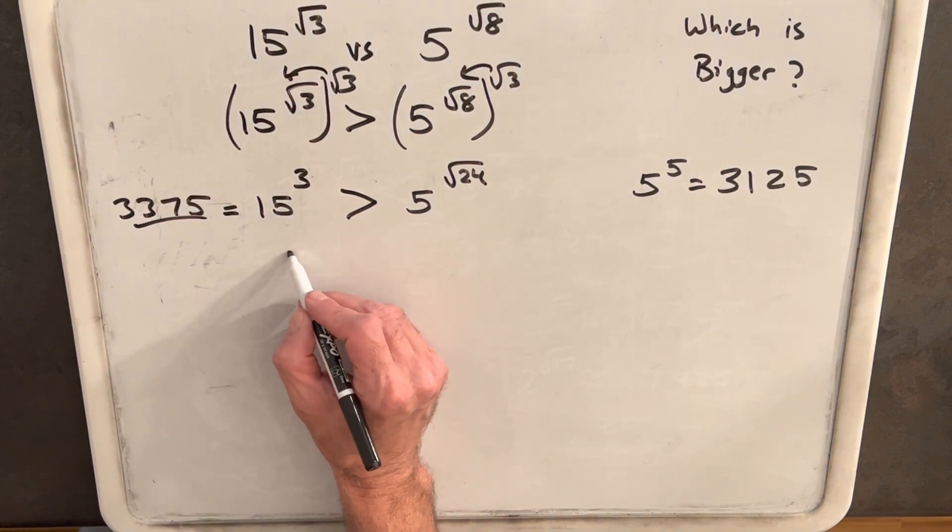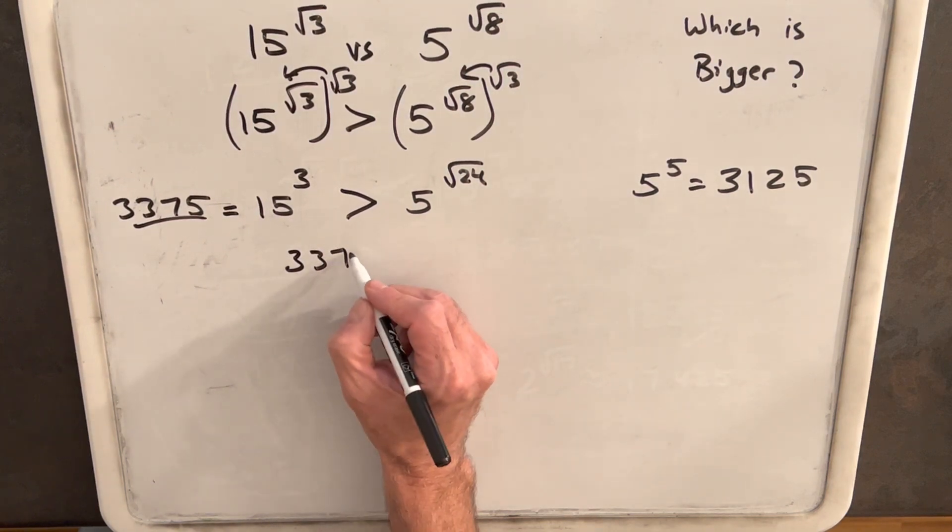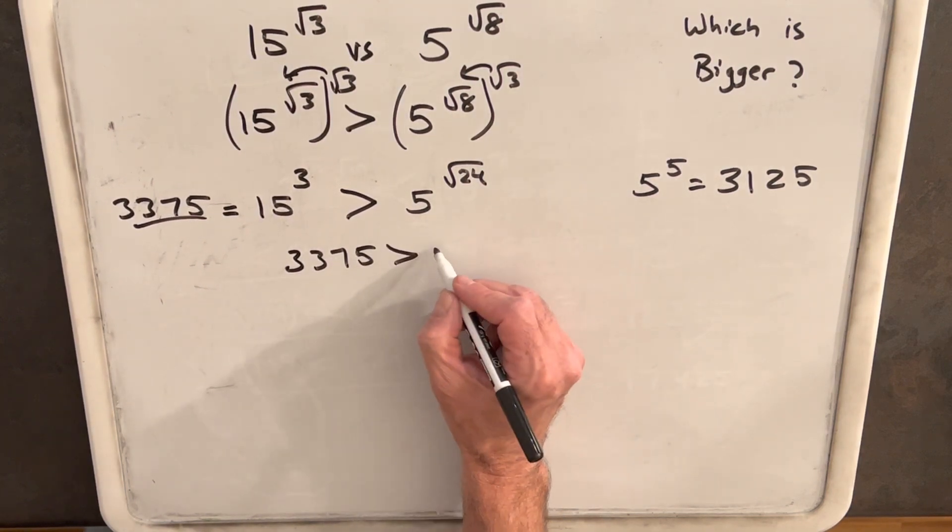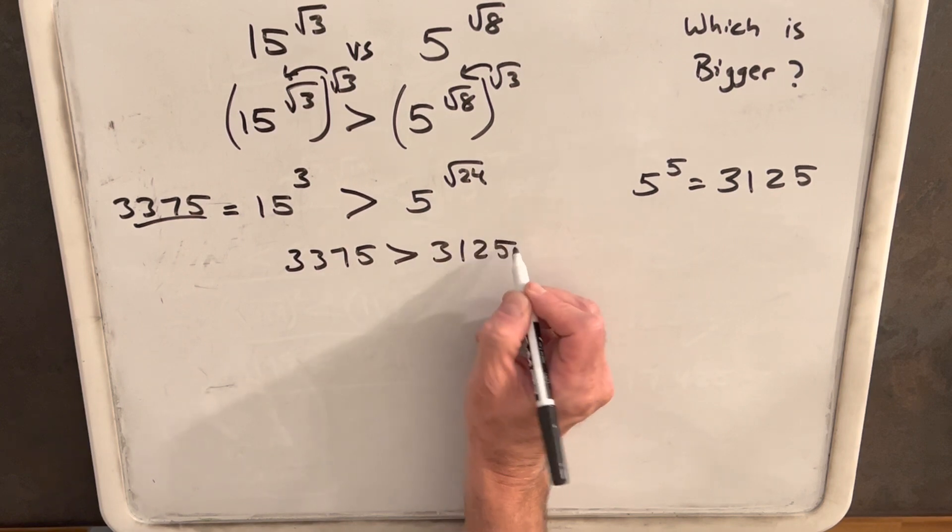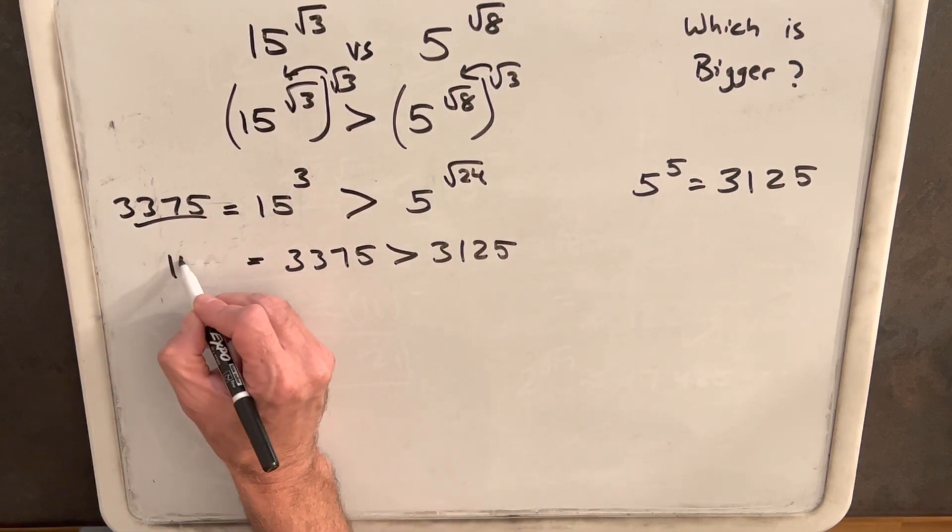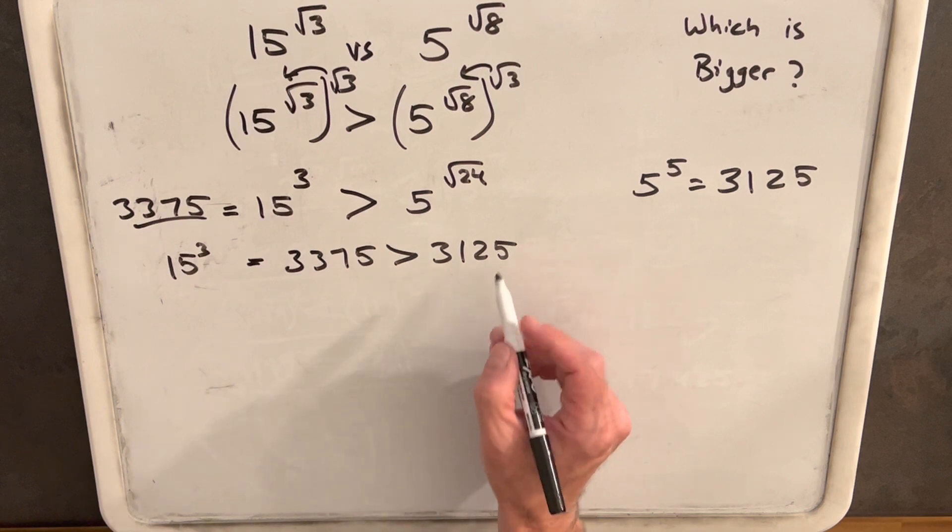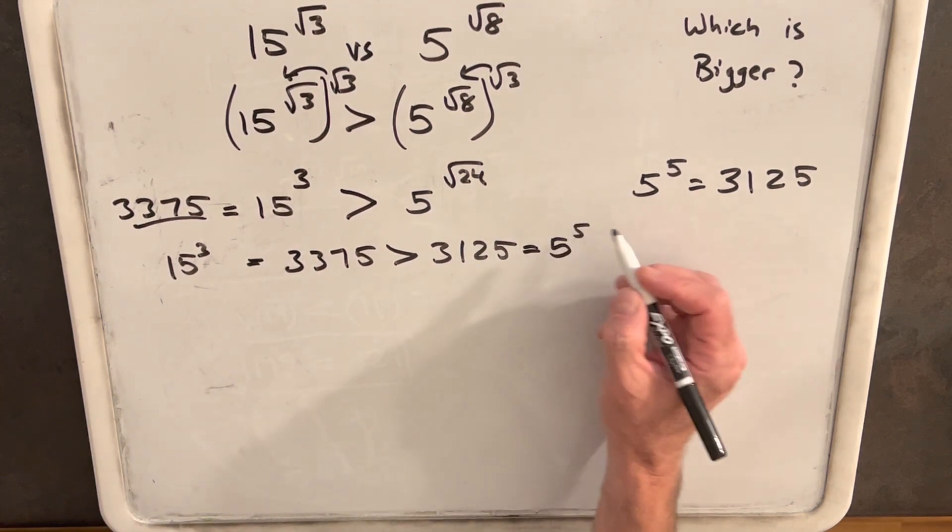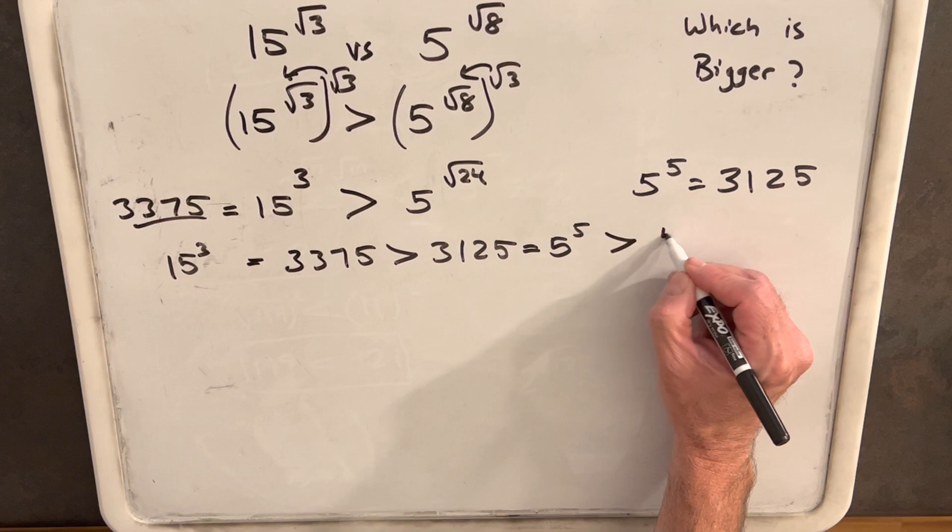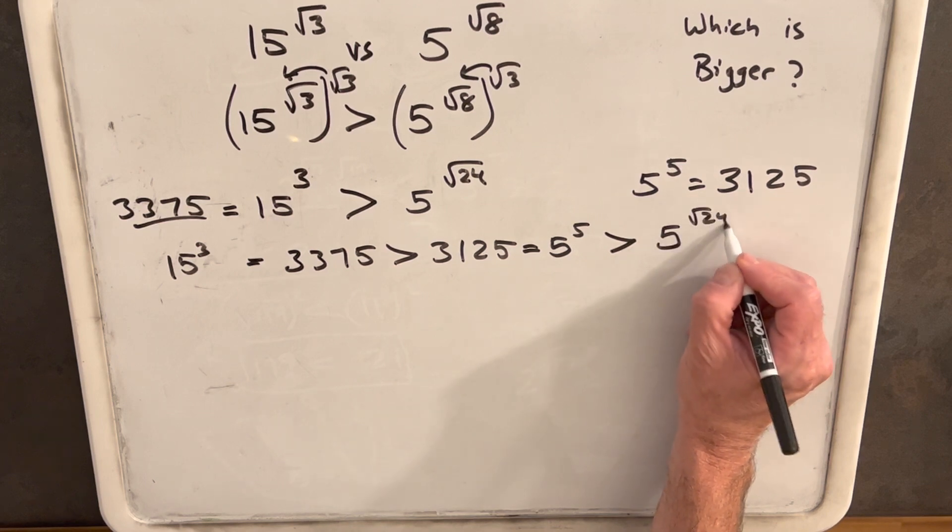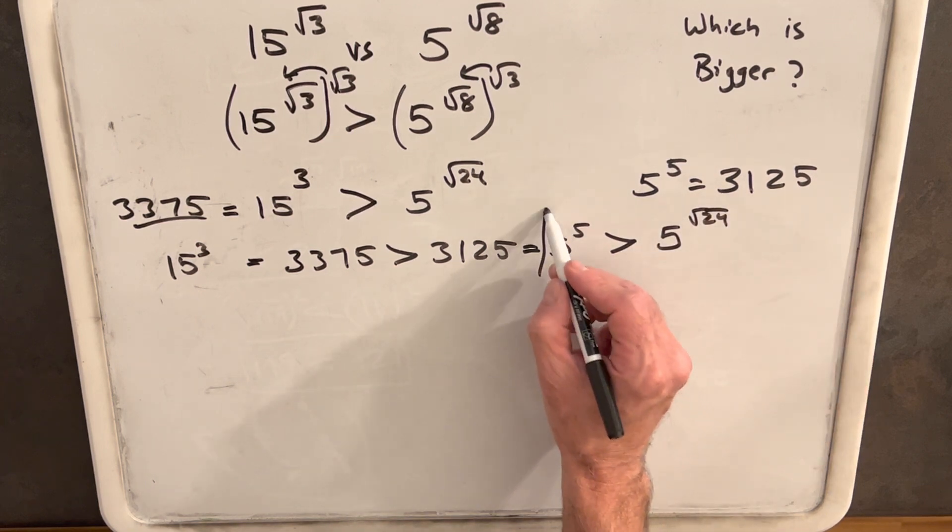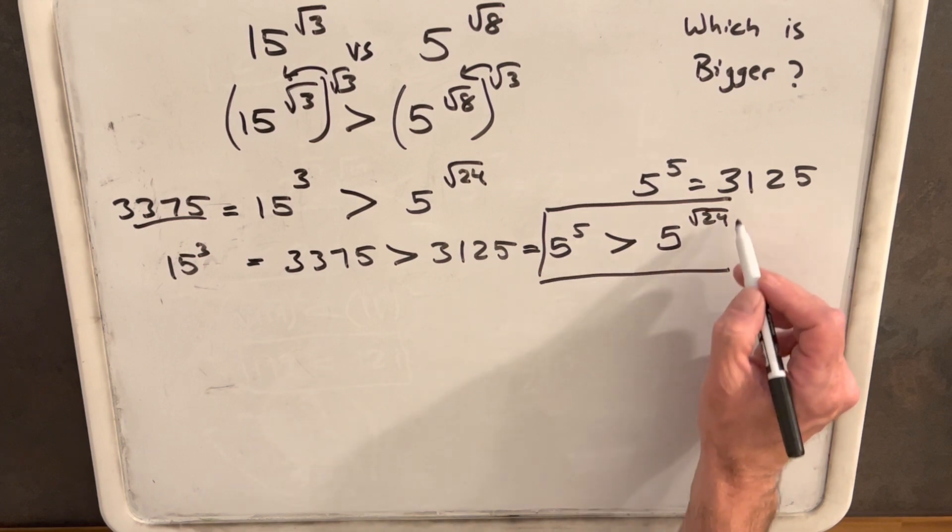So we'll compare. We'll say 3375 is greater than 3125 with this just being 15 cubed. And we want this 3125 which is 5 to the 5 to be greater than 5 to the square root of 24. So we want this piece here.